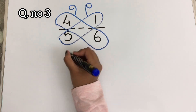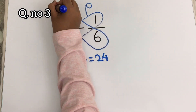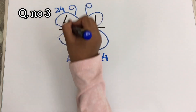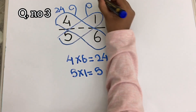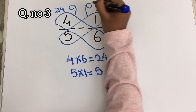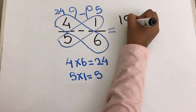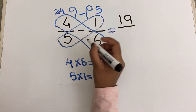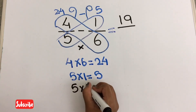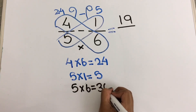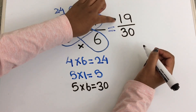4 into 6 — 4 into 6 equals to 24. I am going to write it here. And 5 into 1 — 5 into 1 equals to 5. I am going to write it here. So 24 minus 5 equals to 19. Now I am going to multiply 5 into 6. 5 into 6 equals to 30. I am going to write it as the denominator. So the answer is 19 by 30.